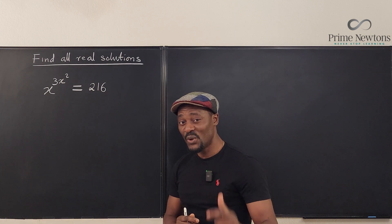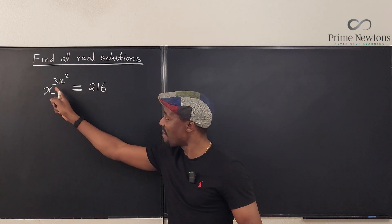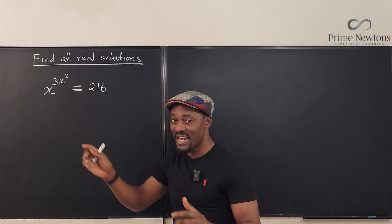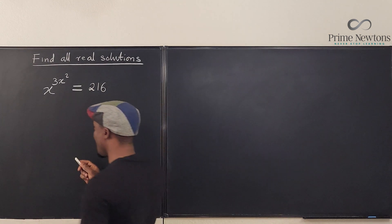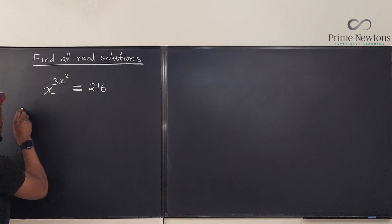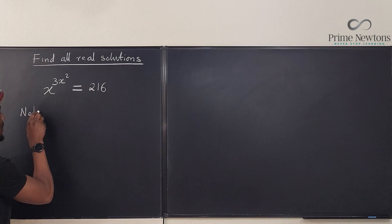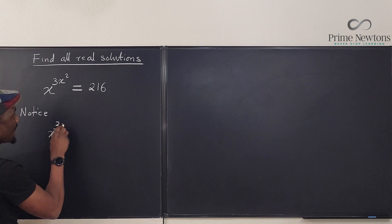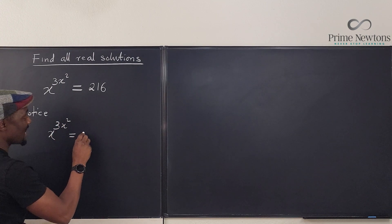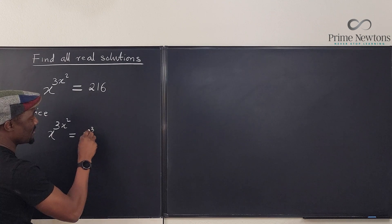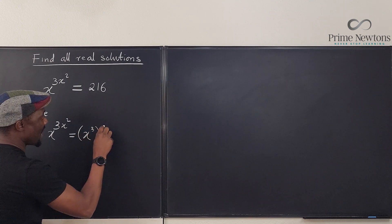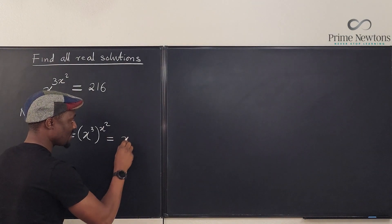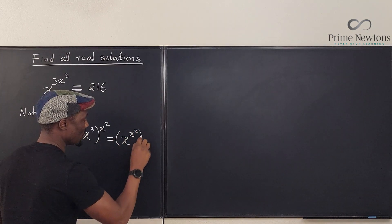According to the laws of exponents, whenever you have a multiplication of the exponents, you can actually separate them. Notice that x raised to power 3x² is the same thing as x raised to power 3, then raised to power x². Or it is the same thing as x raised to power x² raised to power 3.